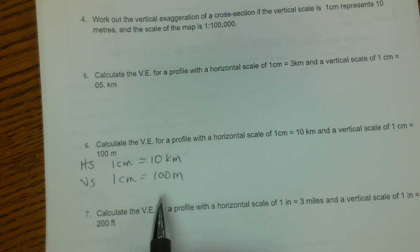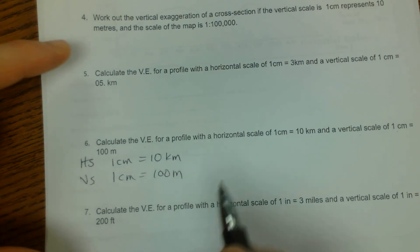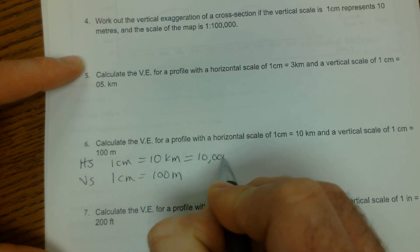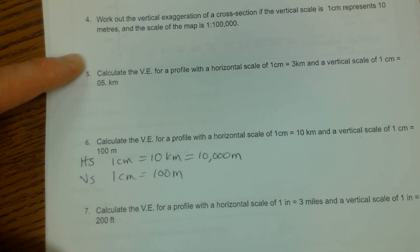So let's just convert one of these. I know that there are 1,000 meters, I'm sorry, 1,000 meters in a kilometer. So 10 times 1,000 would give me 10,000 meters.